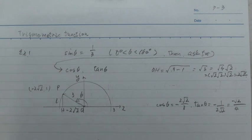Tan theta equals 1 over 3, and theta is more than 180 degrees. Then ask for cos theta and tan theta.